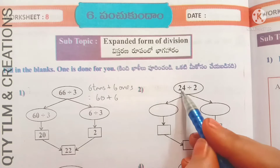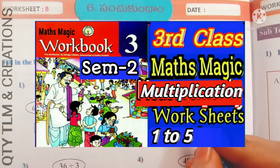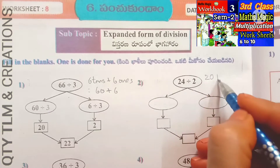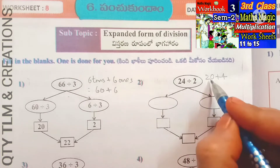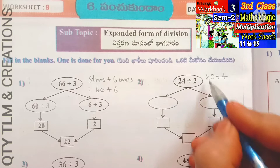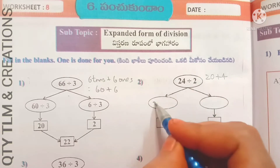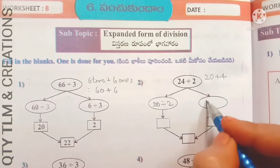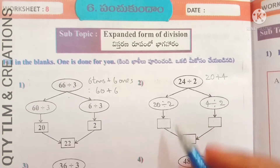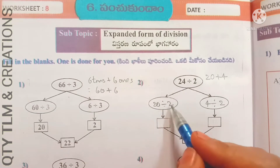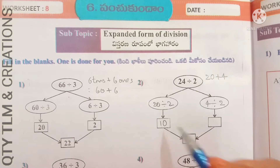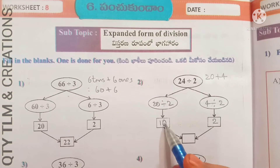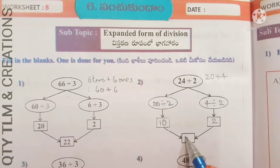Next: 24 divided by 2. The expanded form of 24 equals 20 plus 4. So we divide 20 by 2 and 4 by 2. 2 divides 20 for 10 times, and 2 divides 4 for 2 times. We add 10 plus 2 and we get 12.